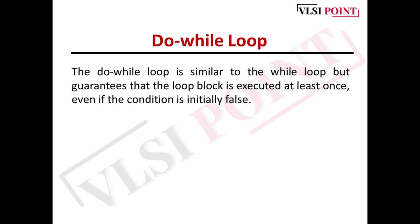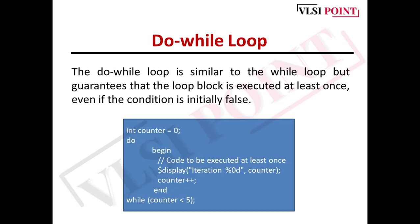Next is do-while. This loop is similar to the while loop, but it guarantees that the loop body is executed at least once, even if the condition is false initially. In a while loop, if the condition is false, the loop doesn't execute. But in do-while, even if the condition is false, the loop executes at least once. For example: int counter = 0; do { $display(...); counter++; } while (counter < 5). Even if counter equals six, the loop still executes one time.